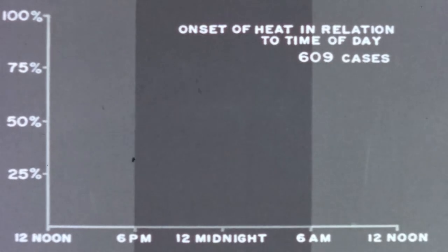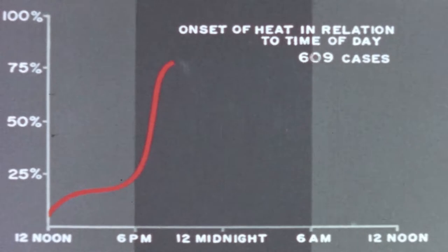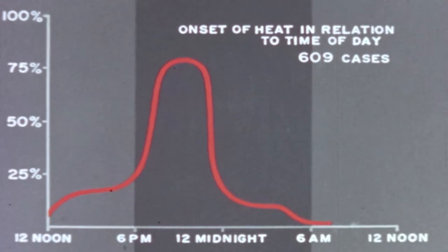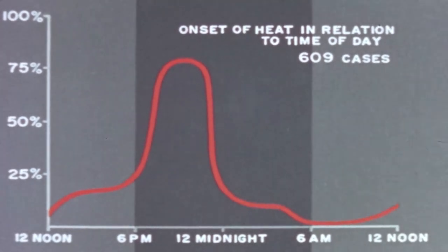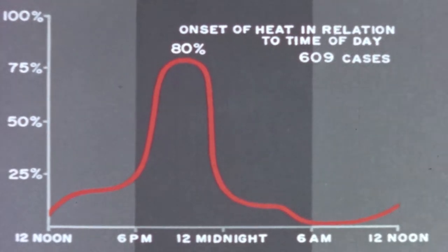The rat is a nocturnal animal and its greatest activity, including the period of heat and ovulation, occurs between the hours of 6 p.m. and 6 a.m. Here is a graph indicating the onset of heat in 609 females — eighty percent of them came into heat between 7 p.m. and 11 p.m.